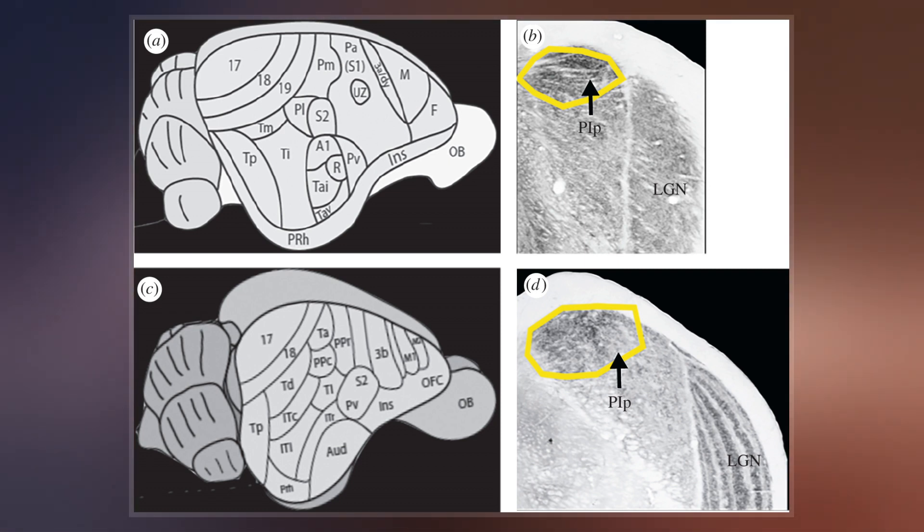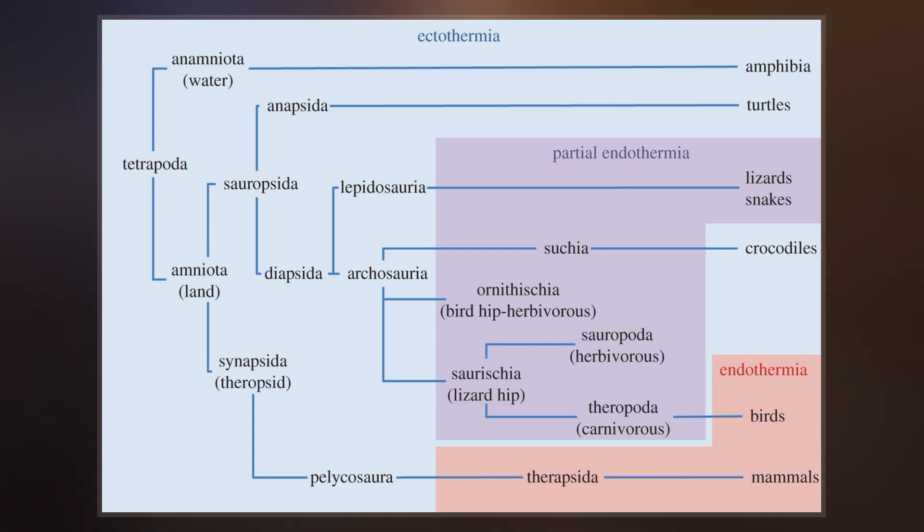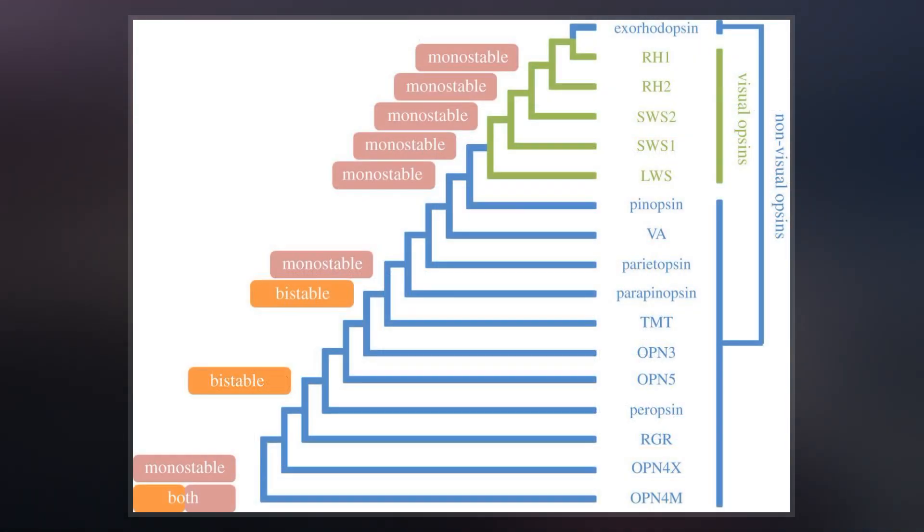The emerging archosaurian groups that flourished after the extinction, including crocodiles and dinosaurs and their ancestors, drove the remaining larger synodonts into extinction, leaving only the smaller forms.